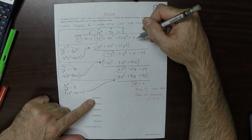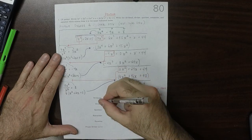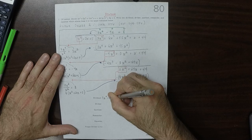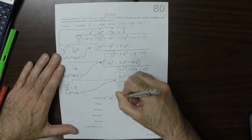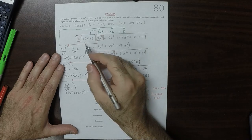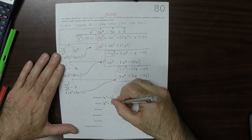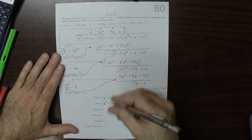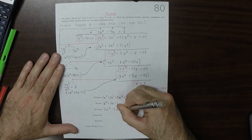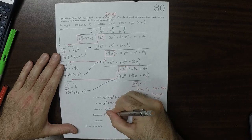The dividend is 3x to the 4 plus 2x to the 3 plus 15x to the 2 plus x plus 44. The divisor is x squared plus 2x plus 5. The quotient is 3x squared minus 4x plus 8. The remainder is 5x plus 4.